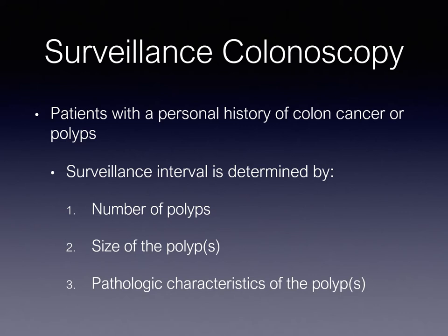This includes the number of colon polyps removed, the size of the individual polyps, and most importantly, the pathologic characteristics of the polyps. When polyps are removed, we are typically looking for a pathologic diagnosis known as adenoma polyps. Adenoma polyps are a risk factor for colon cancer. Tubular adenoma polyps are very common but have a very low probability of developing into cancer. Villous adenoma polyps are uncommon but have a high risk of colon cancer development. The interval to follow-up surveillance colonoscopy is determined by all of these factors.